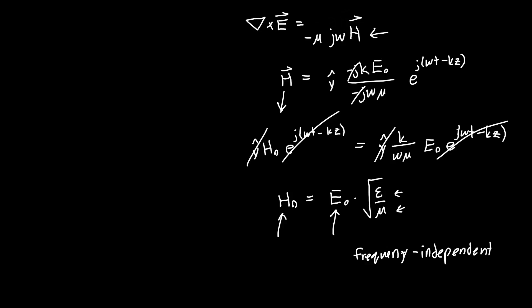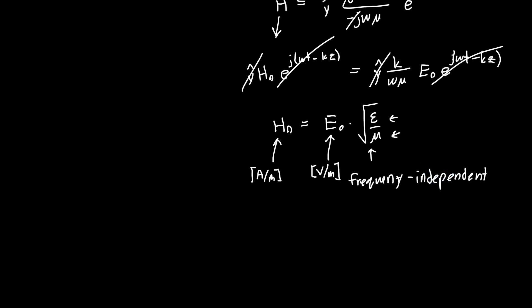Now what about the units? Well, H₀ is in amps per meter or current per length, and E₀ is in volts per meter. So this quantity here has to have a unit of one over ohms, or amps over volts. So it's more intuitive to write this as E₀ is equal to H₀ times √(μ/ε), because now this has units of ohms. And this is exactly analogous to Ohm's law, V = IR. And so we call this quantity, because it has units of ohms, we call this the wave impedance η.